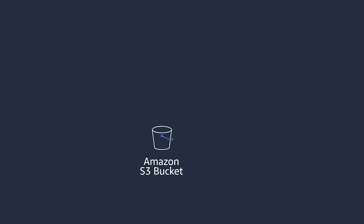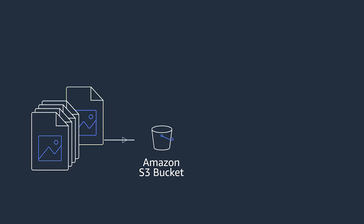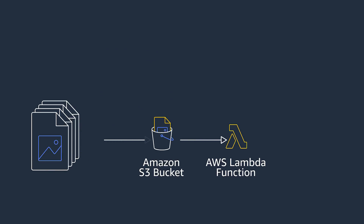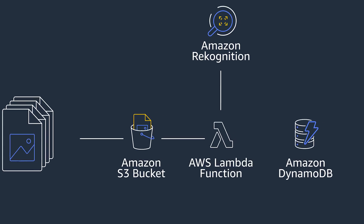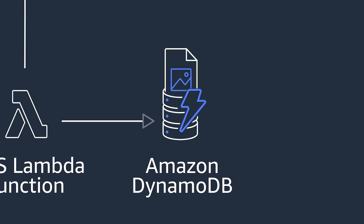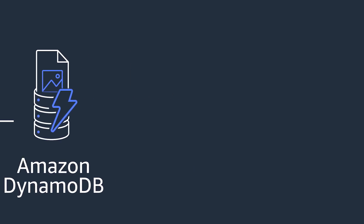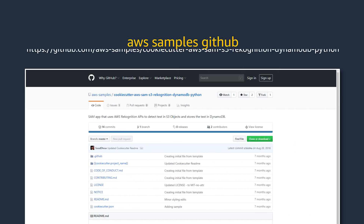I'm now going to demonstrate using SAM to create a simple image processing app that uses Amazon Rekognition to detect text and labels in images. When you upload an image to Amazon S3, S3 sends an event to an AWS Lambda function with details of the file. The Lambda function then calls Rekognition to detect text and labels in the image, and writes the text and labels into an Amazon DynamoDB table. You can find the source code of this app on the AWS Samples GitHub.